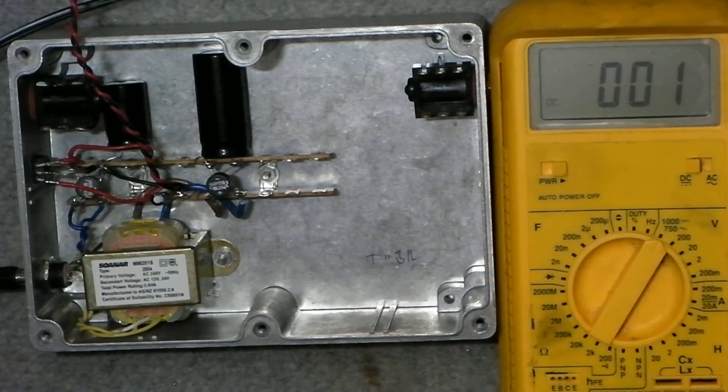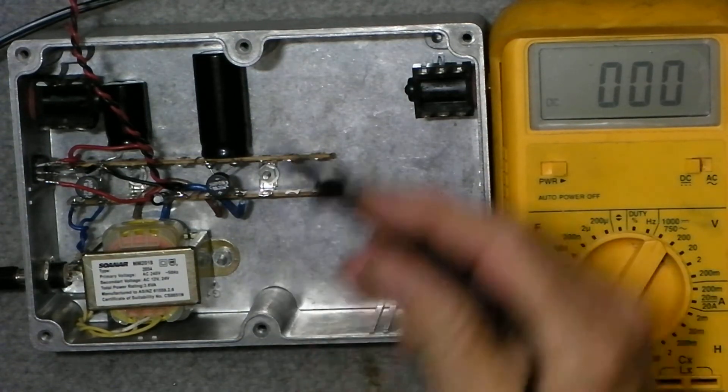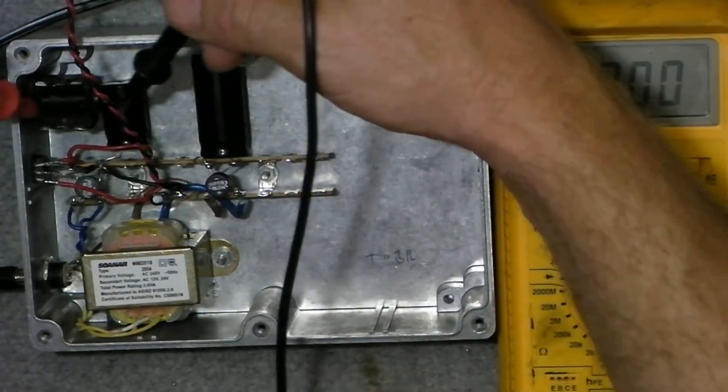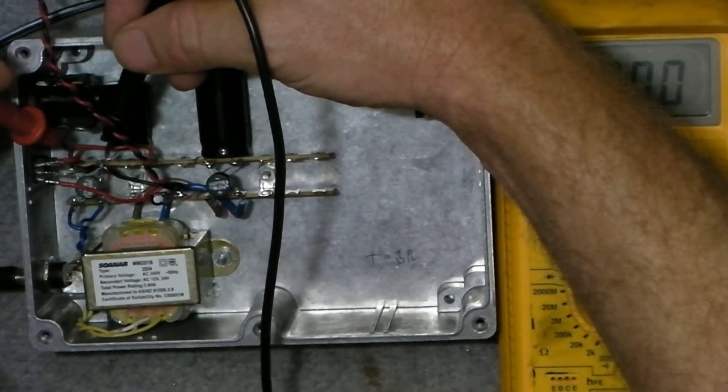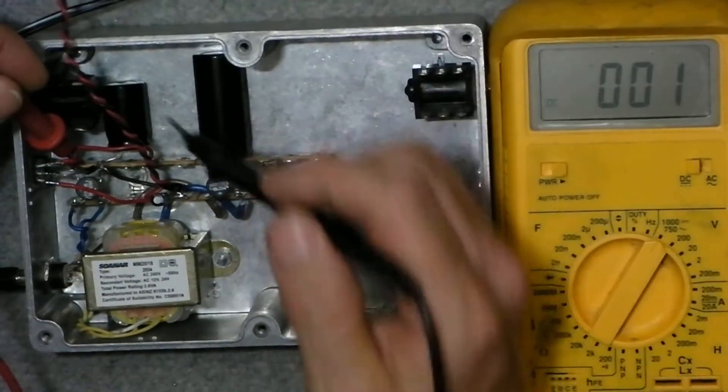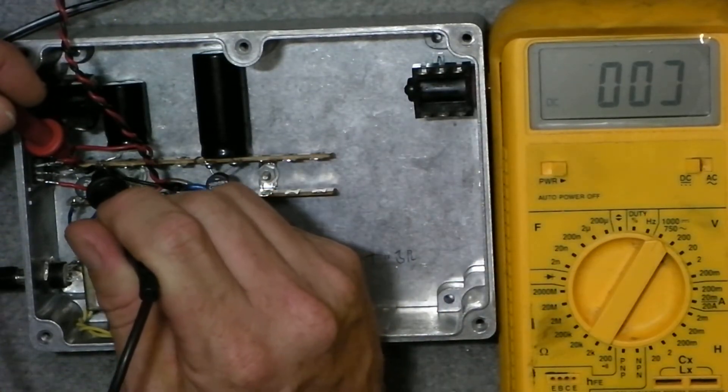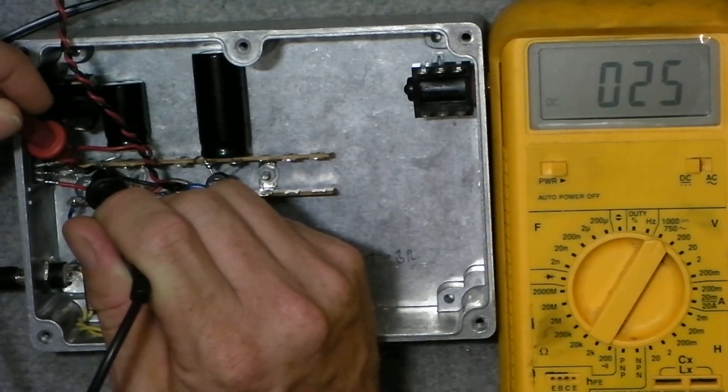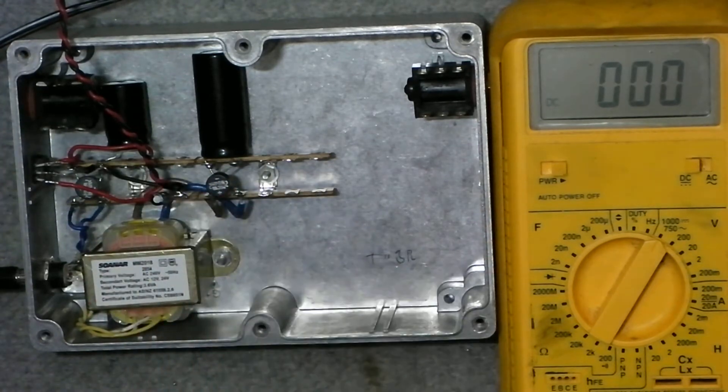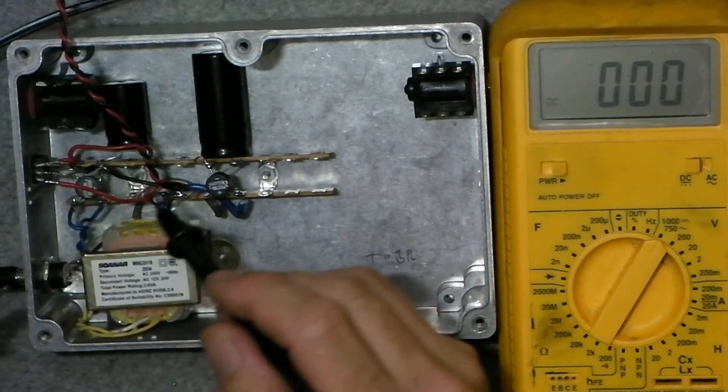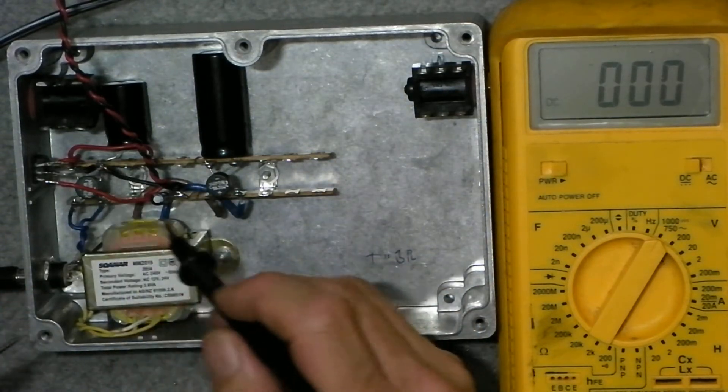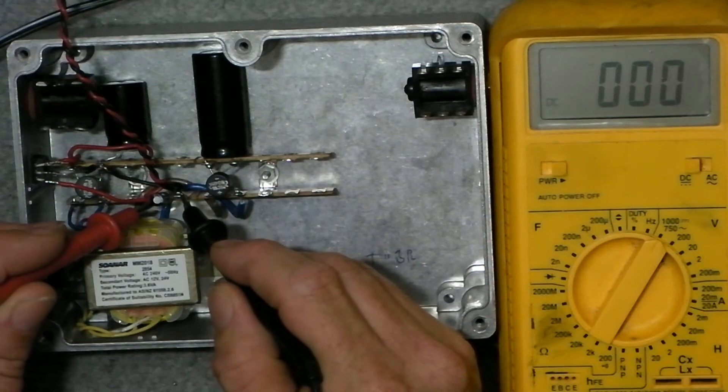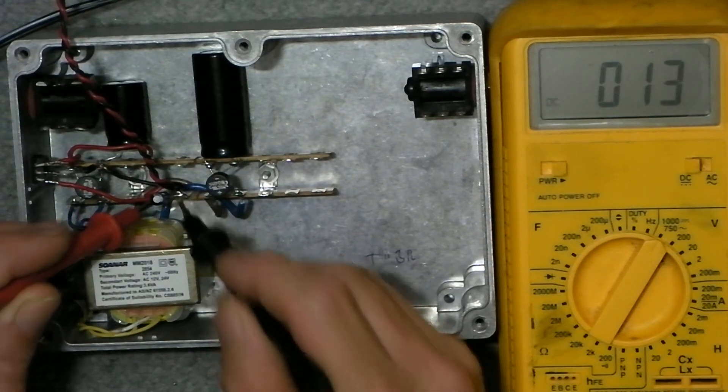We'll go to DC now, and we'll measure the voltage across the output of the, actually 13. And then we'll measure the voltage on the output of the regulator, and it says 13.